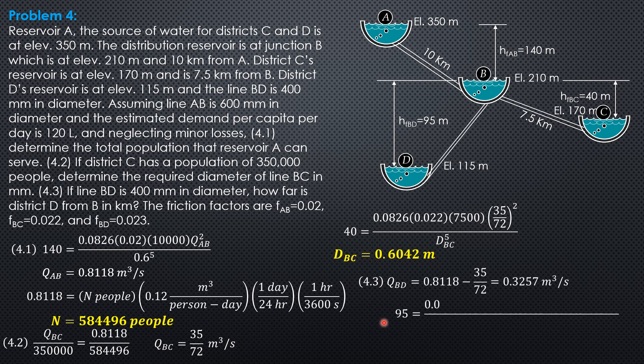And, that is 0.3257 cubic meters. So, head loss in BD, 95 equals 0.0826. Friction factor, 0.023. Length in BD in kilometers. So, I multiply 1,000 so that BD is in kilometer automatic. Times discharge 0.3257 square over diameter which is 400 mm or 0.4. So, solving for the length of BD, it is 4.827 kilometers.